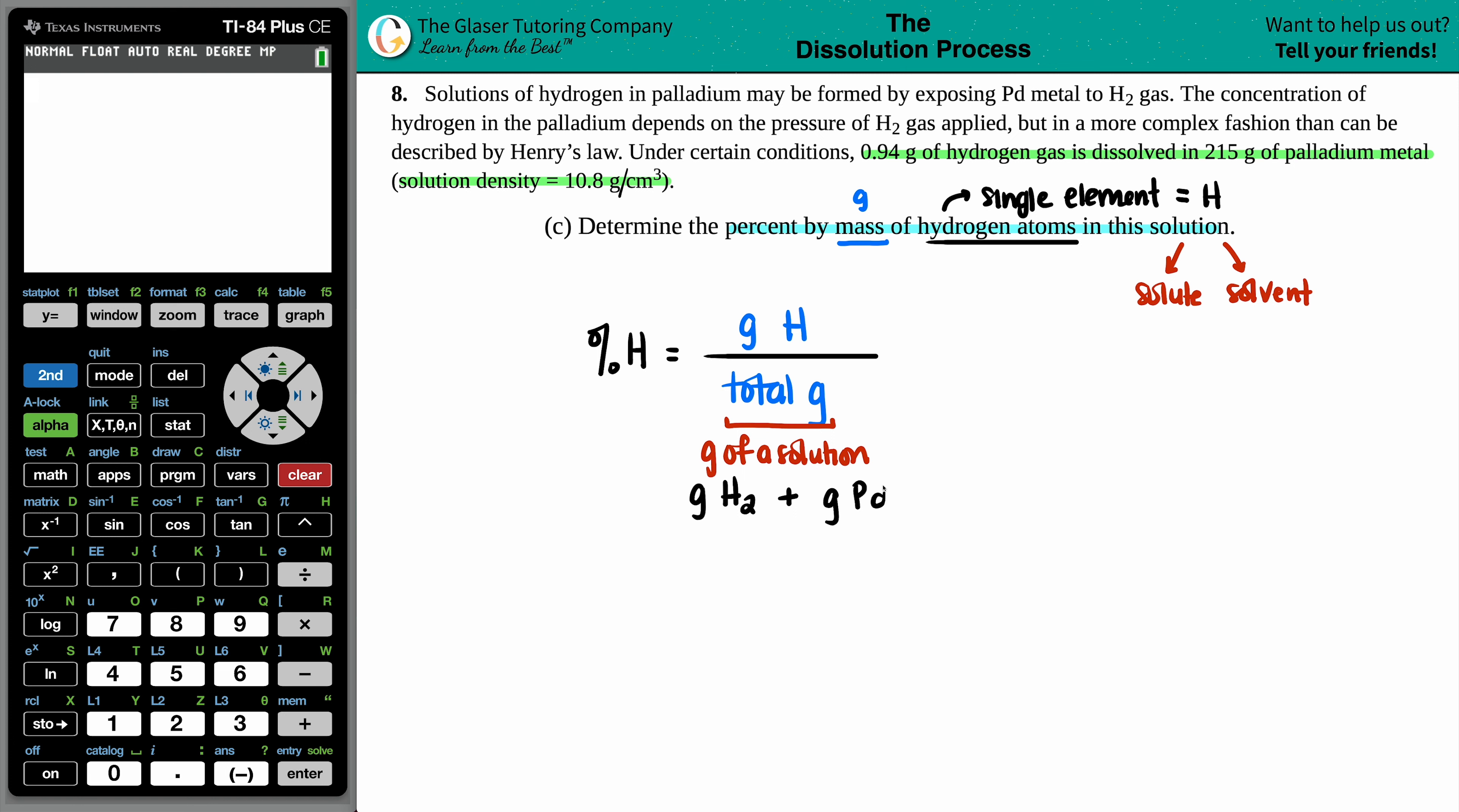But they also kind of give you a little hint over here that it's going to be H2 plus the grams of the palladium. So we can find this total mass out by just doing 0.94 grams from the H2 plus the 215 grams of the palladium. So I have a total grams of the solution. The total mass is 215.94 grams total grams of solution. Now, let's just finish up the formula. Remember, it's always part over whole, but then we have to times by 100.